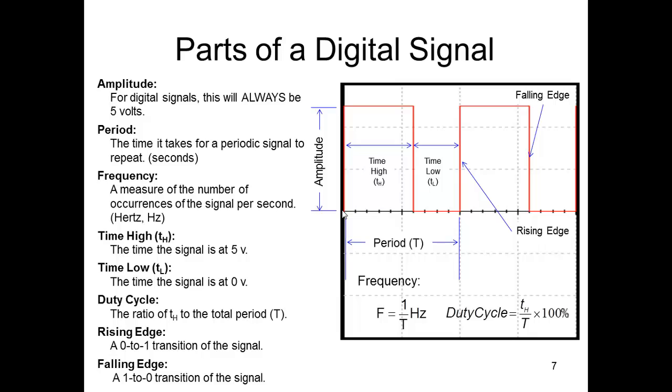Period is the time it takes to repeat. Again, so to get one complete cycle. Frequency then would be one divided by the period.